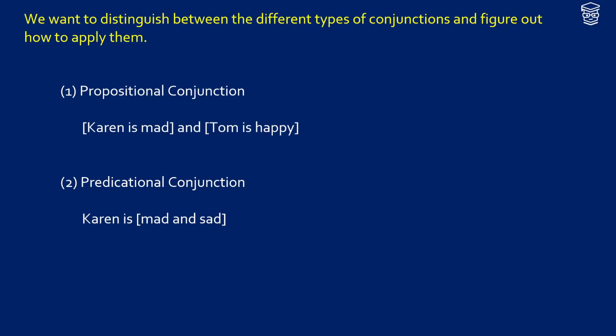We're going to cover propositional conjunction and predicational conjunction in this video. There is a difference between the two types. They may use the same types of words, but they're going to behave differently semantically.